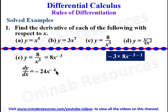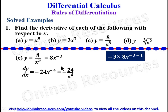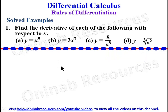We can now write this back in fraction form, so we have negative 24 over x raised to power 4 — we just reverse the index law we applied. That is the derivative of y = 8 over x cubed. Now we go to problem 1d.